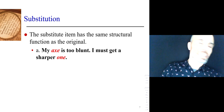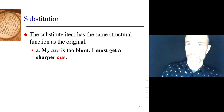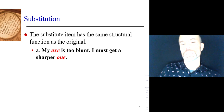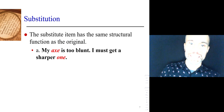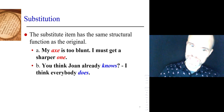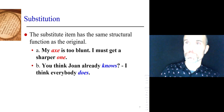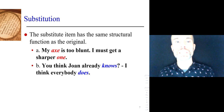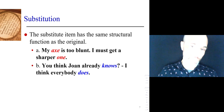We've got 'one', which substitutes for axe, and 'does', which substitutes for knows. You could have said: my axe is too blunt, I must get a sharper axe. Instead, you say: my axe is too blunt, I must get a sharper one. The substitute has the same structural function as the original — structural here means grammar, meaning nouns and verbs. Axe is a noun, and one is a noun just like axe. With verbs: you think Joan already knows. Knows is a verb. I think everybody does — does substitutes for knows. We can also do it with clauses: has Barbara left? I think so. So substitutes for the whole clause 'Barbara has left'. You can have a noun, a verb, or a clause.